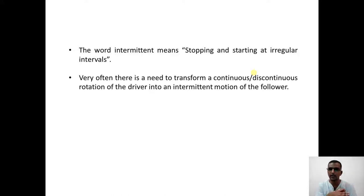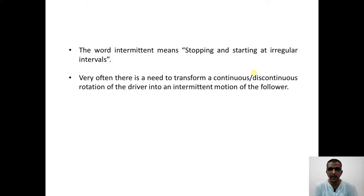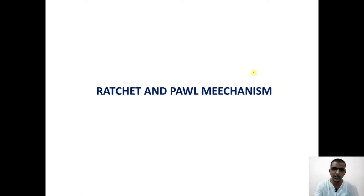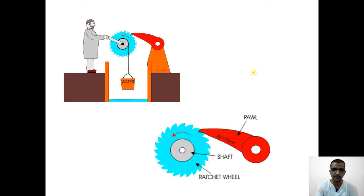We have a driver which rotates continuously and a driven member which rotates at regular or irregular intervals. That is when we make use of intermittent motion mechanisms, and one such example of an intermittent motion mechanism is a ratchet and pawl mechanism.